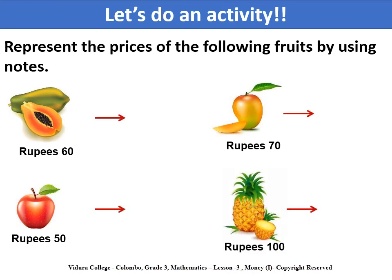Ok students, let's do an activity. Represent the prices of the following fruits by using notes. The first item is a pepo which is 60 rupees. The second item is an apple which is 50 rupees. The third item is a mango which is 70 rupees. And the last item is a pineapple which is 100 rupees. So let's get started.